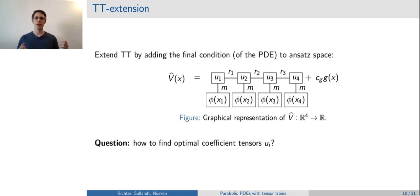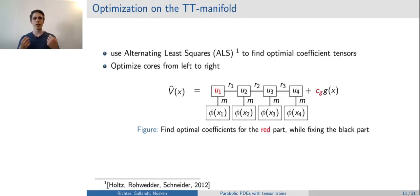We extend the ansatz space by adding the final condition. This is also done in computational finance and also proposed for linear function spaces in the context of BSDEs. This procedure only increases the dimension of the ansatz space by one and thus does not increase the complexity of the computations in a relevant way. The remaining question is how to find optimal component tensors ui and cg.